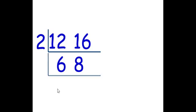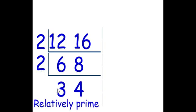What number can we factor out of 12 and 16? This would be 2. 12 divided by 2 is 6. 16 divided by 2 is 8. Now we can factor out a 2 as well. 6 divided by 2 is 3. 8 divided by 2 is 4.